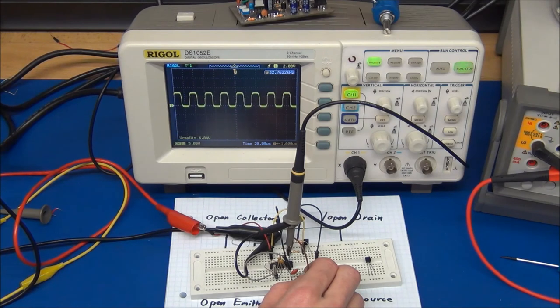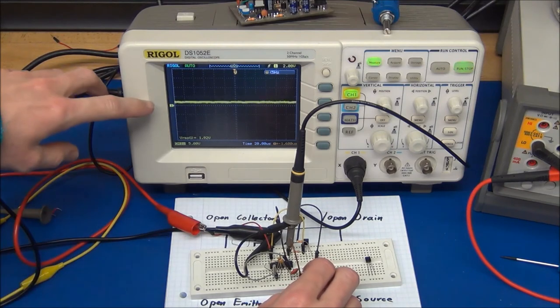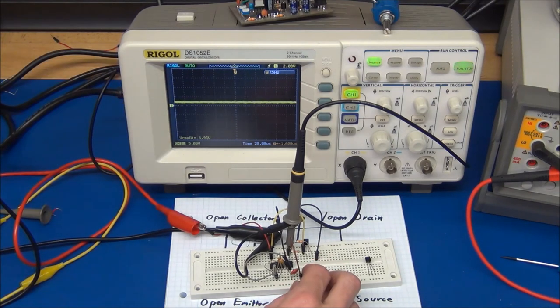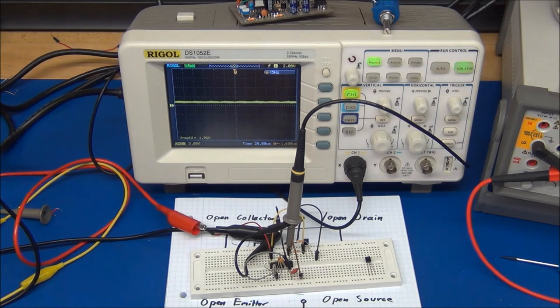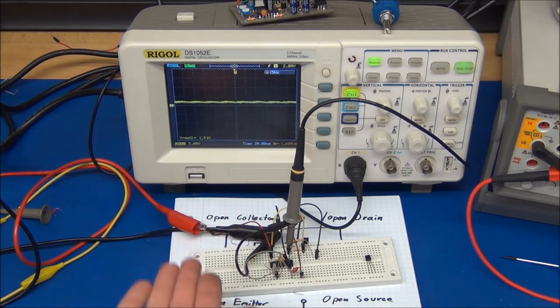But if I connect just the 220 nF capacitor across the output, then the voltage just sits somewhere between the rails, because it cannot either switch fast enough or supply enough current to pull the capacitor high and low.